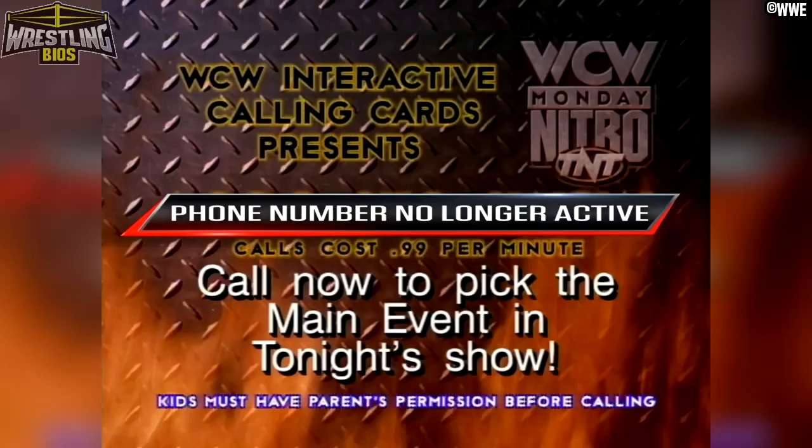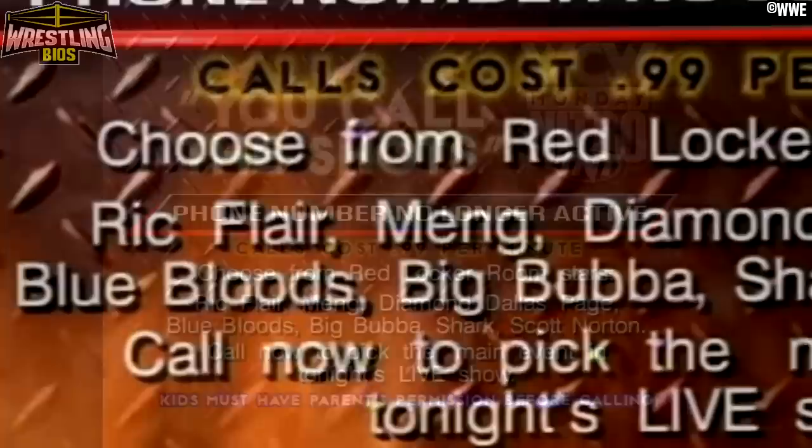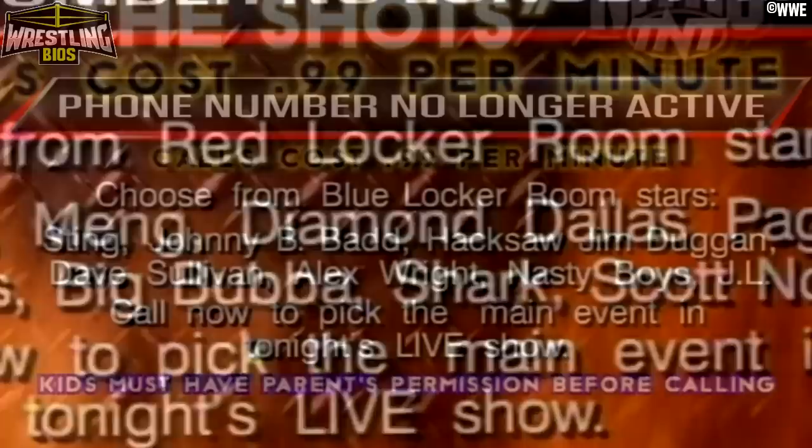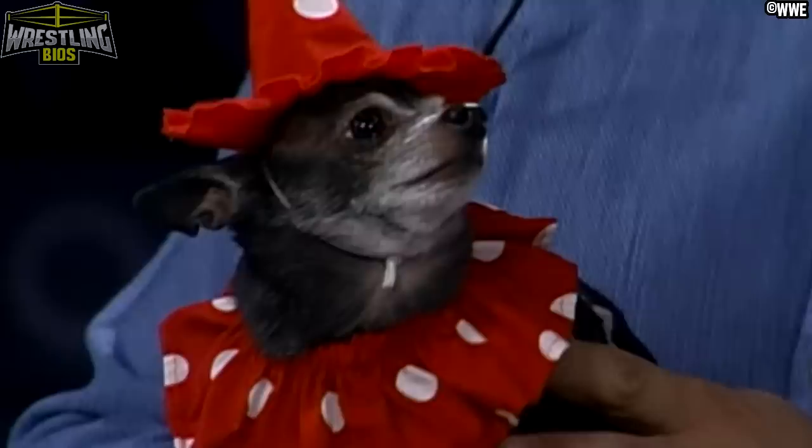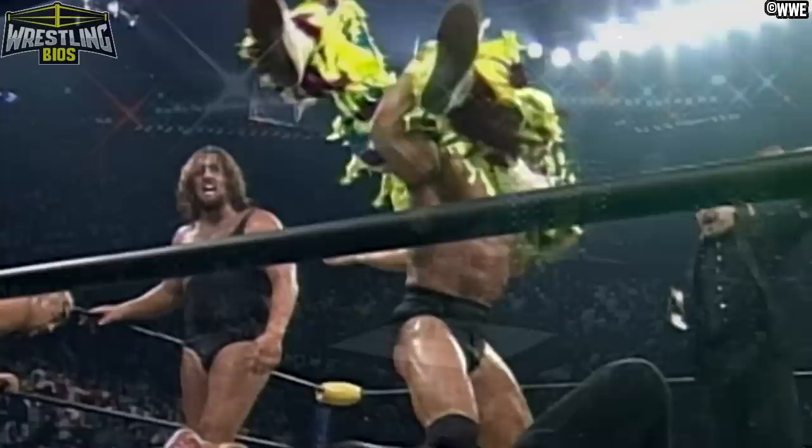Over to WCW Nitro and Eric Bischoff kicks things off by letting us know that we, the fans, can dial a premium phone number to decide tonight's main event. Fans can choose someone from the red locker room to face someone from the blue locker room. The red heel locker room features Ric Flair, Diamond Dallas Page, The Shark and Big Bubba, while the blue babyface locker room has Johnny B Bad, Sting, Alex Wright and Mr. JL. We are shown clips from Halloween Havoc. The focus is put on Lex Luger turning on Randy Savage. Randy is in the building tonight for Nitro and he wants to get his hands on Luger.